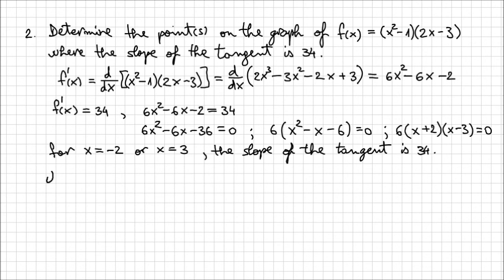So I'm going to take them one by one. If x = -2, then the y value is going to be f(-2). And I'm going to evaluate this by plugging this value into the expression of f(x). So it's going to be equal to ((-2)² - 1)(2(-2) - 3). That's easy to evaluate. It's going to be 3 times -7, which is -21.